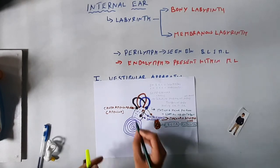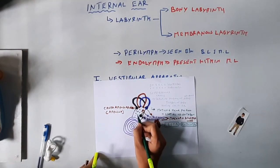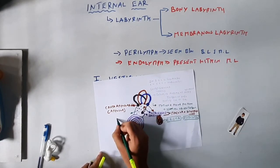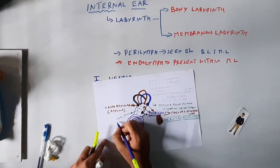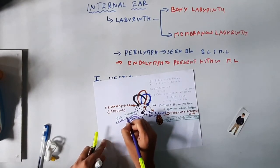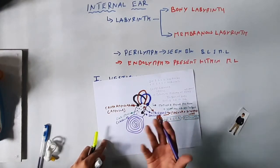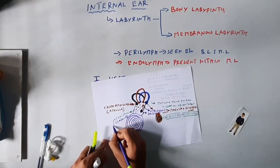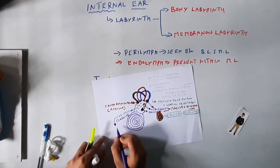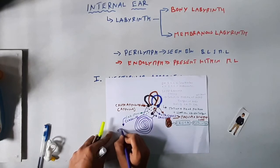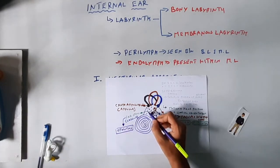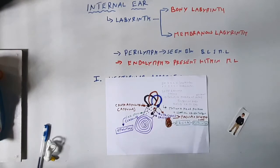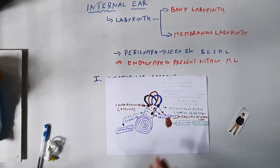There are also tiny structures within the labyrinth called ear stones, made up of calcium — so they are calcareous in nature. The biological name for ear stones is otoliths. Otoliths are calcareous stones present within the labyrinth and play a role in detecting body position.